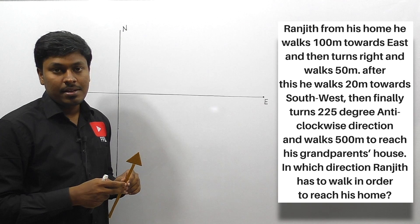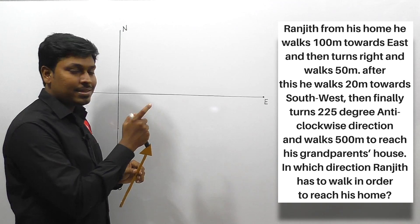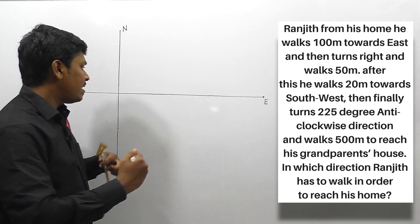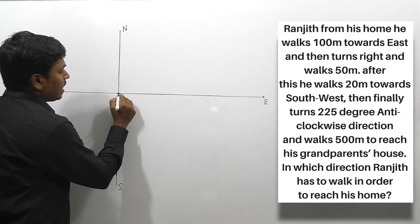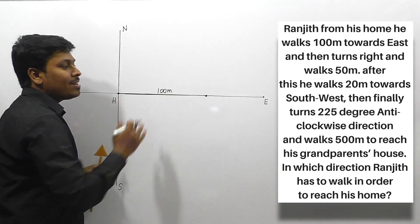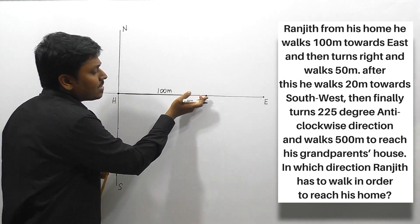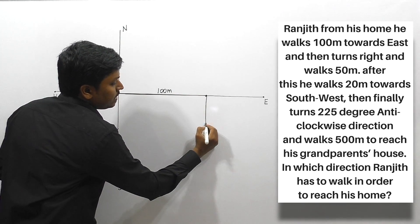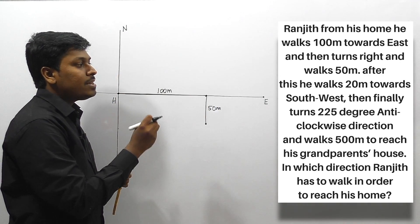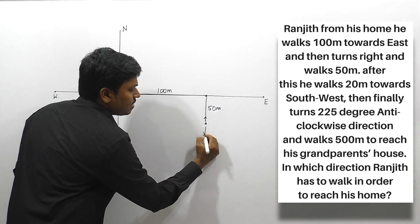For these types of questions we are going to use a simple logic so you can easily crack them in exams. First, Ranjit from his home walks 100 meters towards east — assume this is Ranjit's starting point. He walks 100 meters east, turns right, and walks 50 meters. In many of my direction videos I have told you one thing: just draw a small direction diagram with north, south, west, and east.